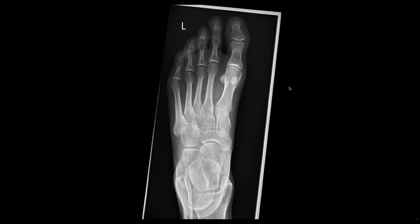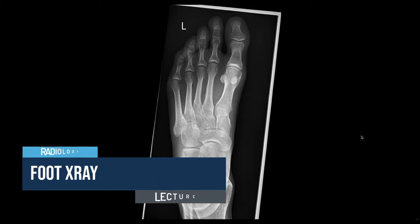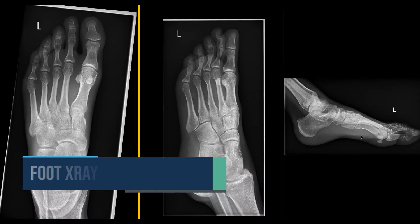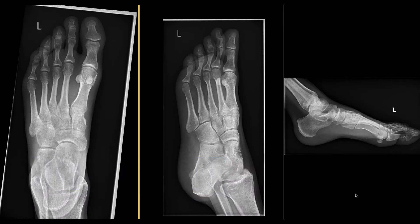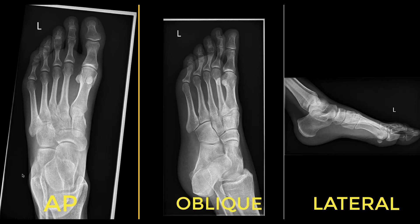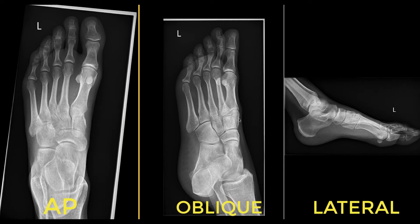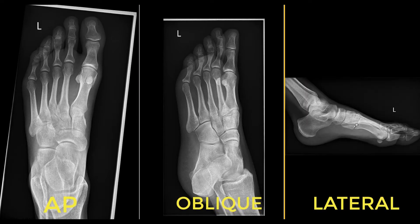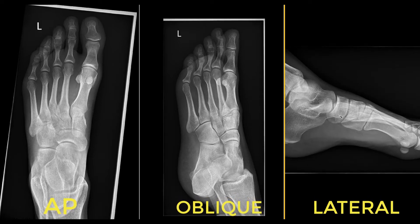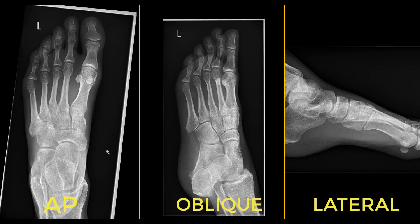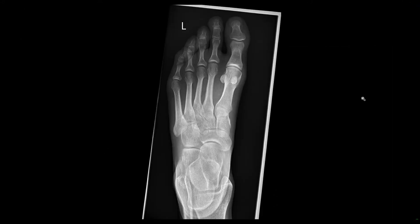We're going to look at a foot X-ray today. The first thing to know are the views. There are three views for the foot X-ray: the AP view on the left, the oblique view in the middle, and the lateral view. So AP, oblique, and lateral — these are the first things you should know.